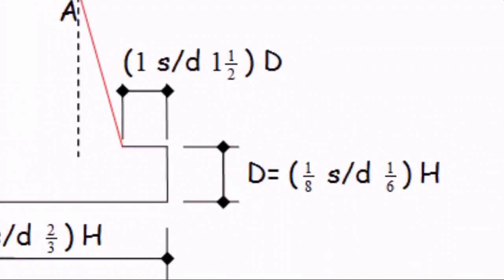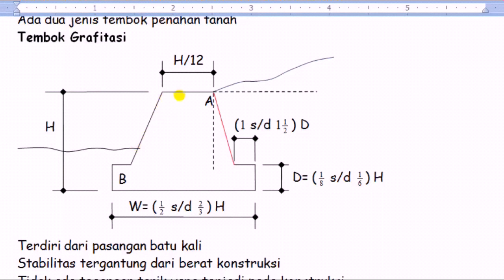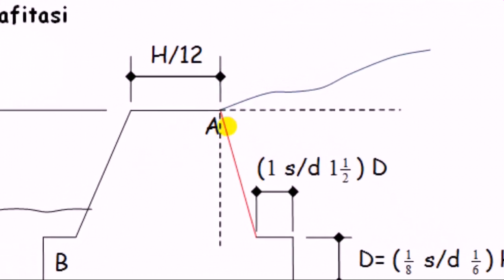Nah inilah ukuran yang pertama yang harus kita rencanakan atau kita tetapkan. Nah tembok penahan tanah ini ada dua titik yang harus kita perhatikan. Yang pertama adalah titik A ini.